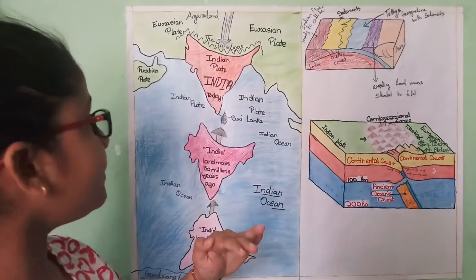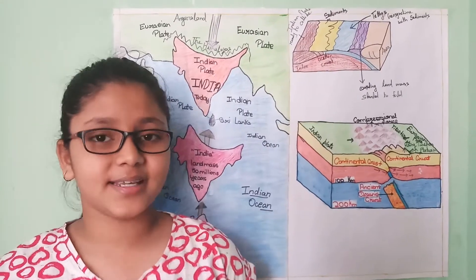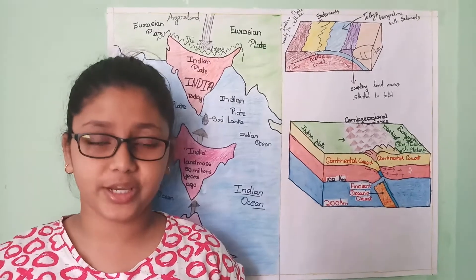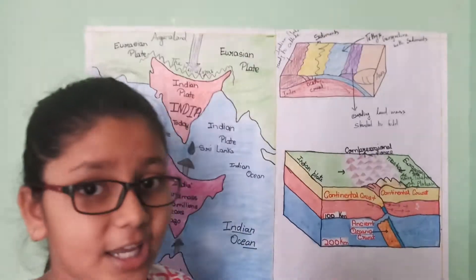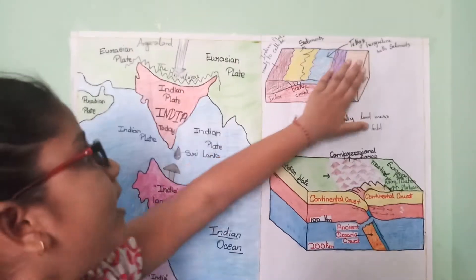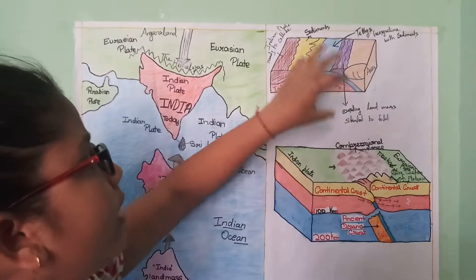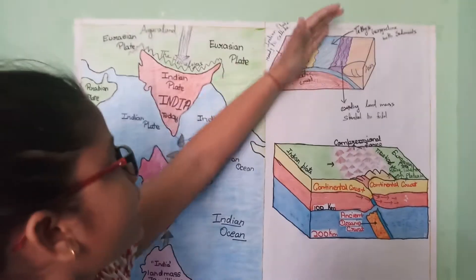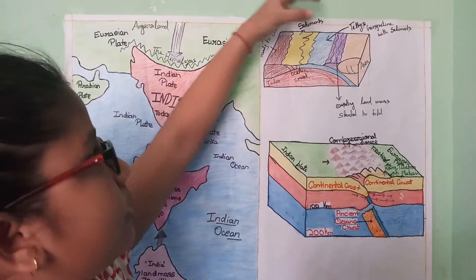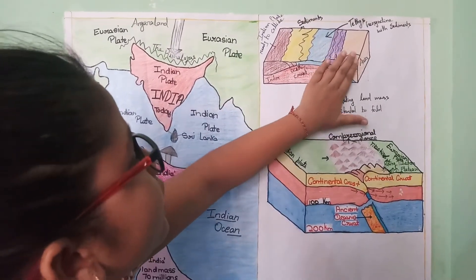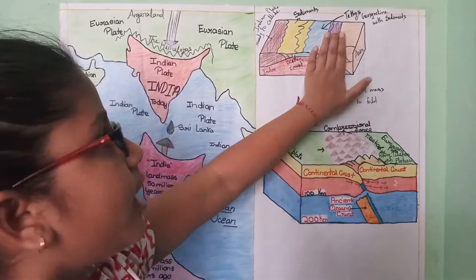The Indian plate and the Eurasian plate started to push each other. To understand how the Himalayas formed, we look at this picture. Here we can see that the Indian plate is ready to collide with the Eurasian plate, carrying all the silt which erosion agents had deposited on the floor of the Tethys Sea. The Tethys Sea started going inside the Eurasian plate with the sediments and the silt. With the Eurasian plate, folds started to form and they gained height — it is now called the Tibetan Tethys.